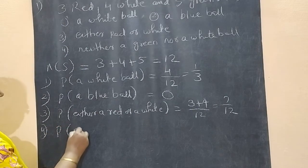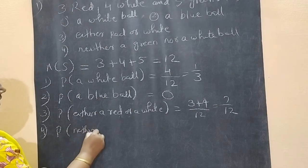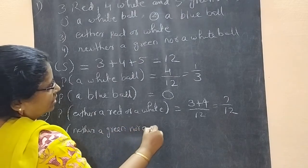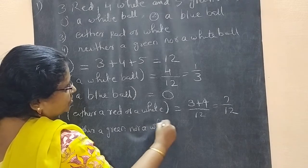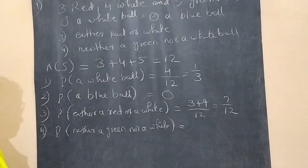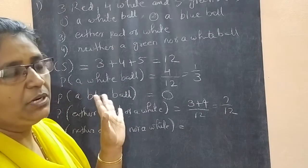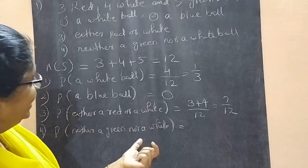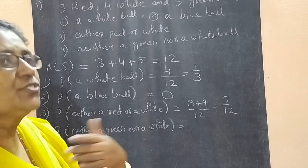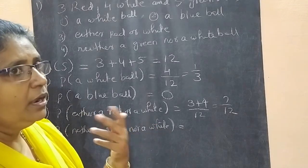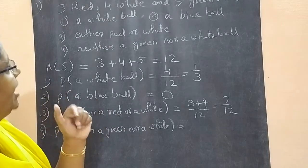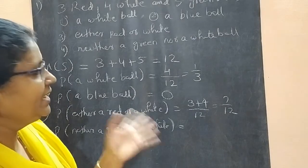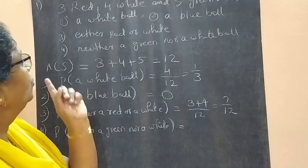Then fourth one is probability of getting neither a green nor a white. Neither, you know what is the meaning of neither - that is not possible. Neither means not possible. So if it is green or white, we lose the game. But we want which one then? Red we want. We don't want green and white. We want only red.